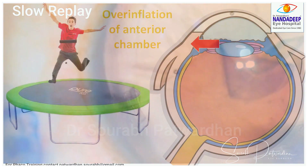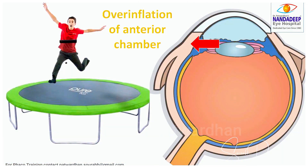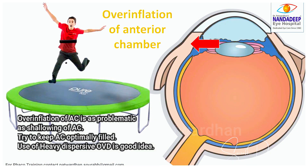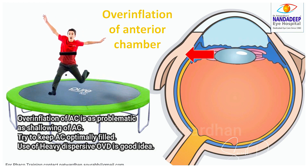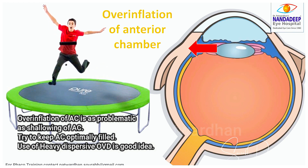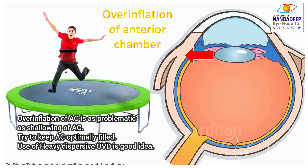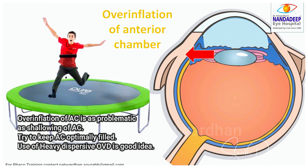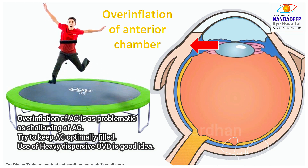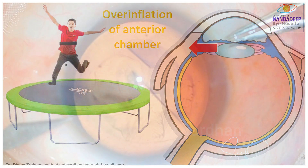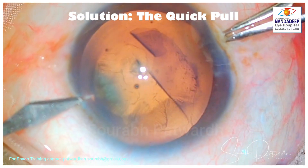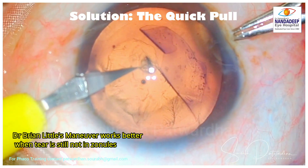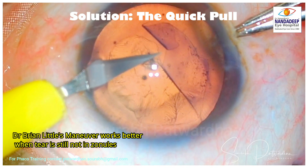This can be explained in animation: over-inflation of the anterior chamber will push the lens-iris diaphragm backward, causing more zonular stretch and pulling of the capsulorhexis outward. So over-inflation of the AC is as problematic as shallowing of the AC. Try to keep the AC optimally filled rather than causing over-inflation.